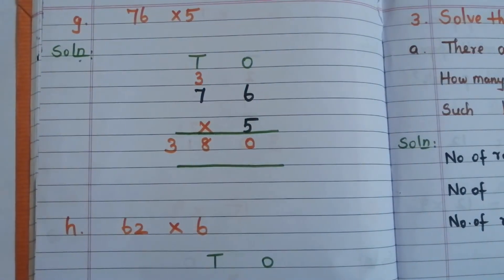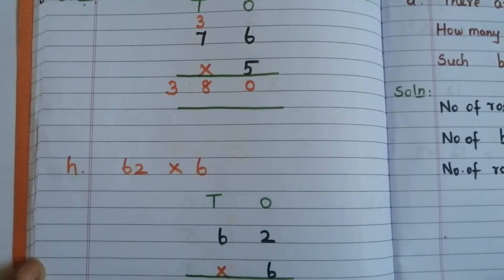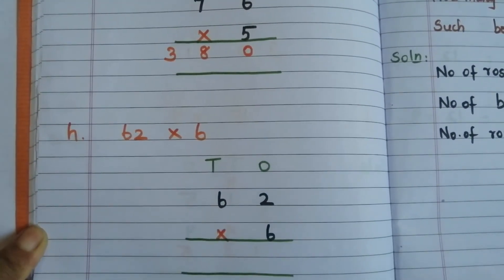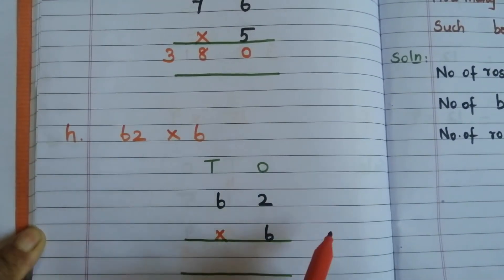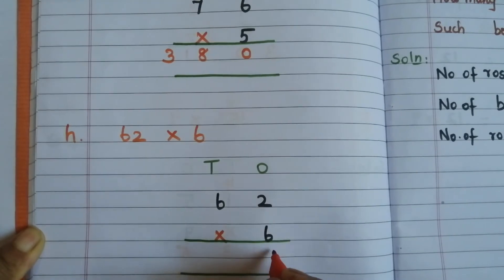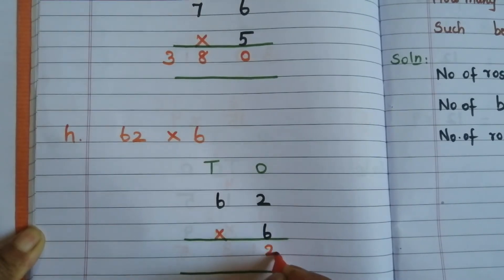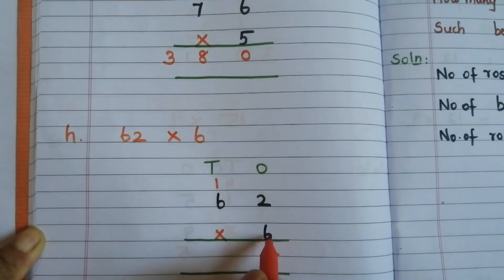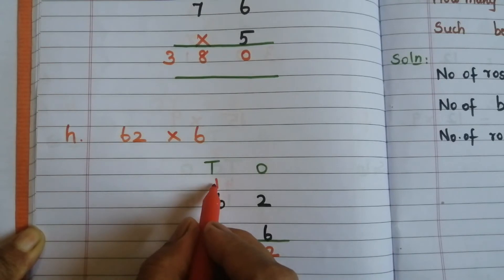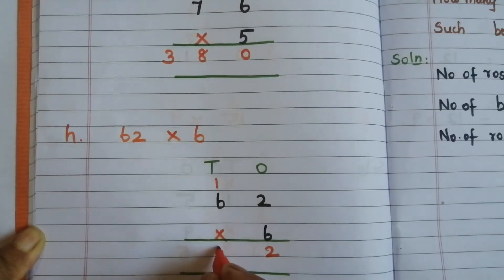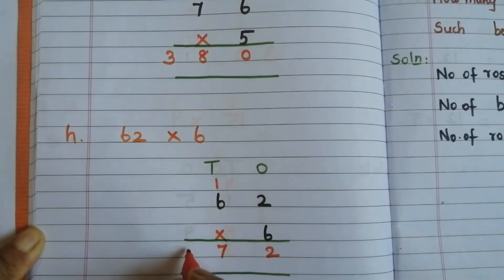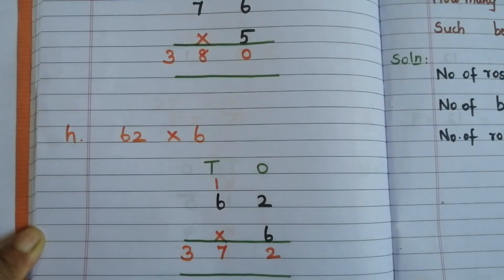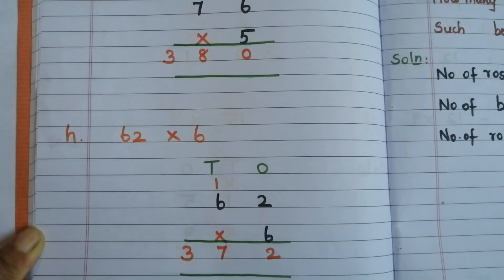H: 62 × 6 — 6 twos are 12, write 2 and carry over 1. 6 sixes are 36, plus 1 = 37. The answer is 372.